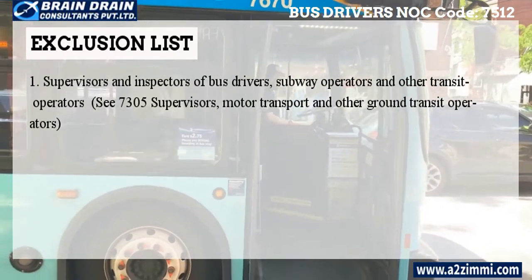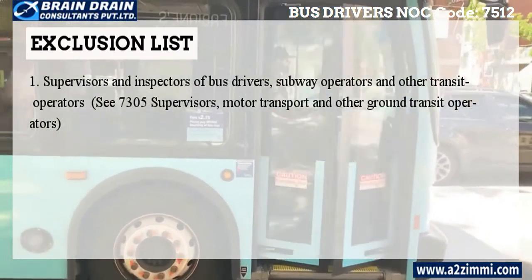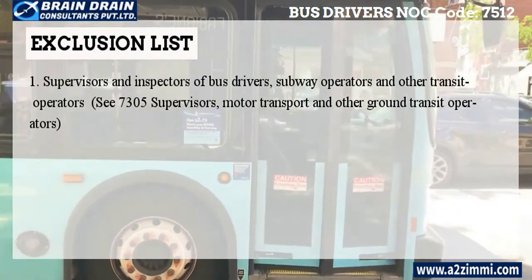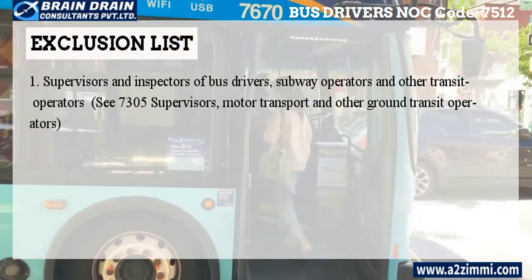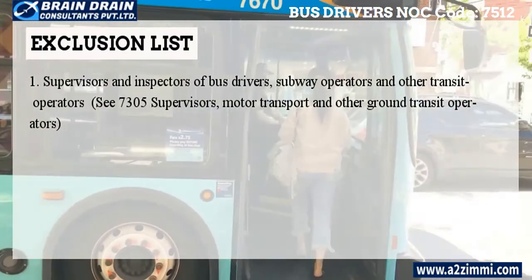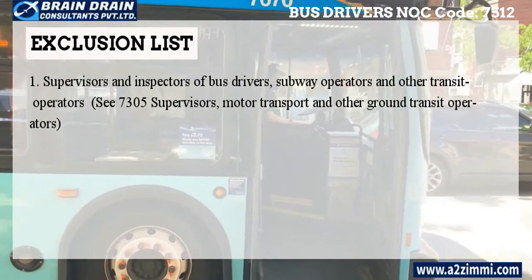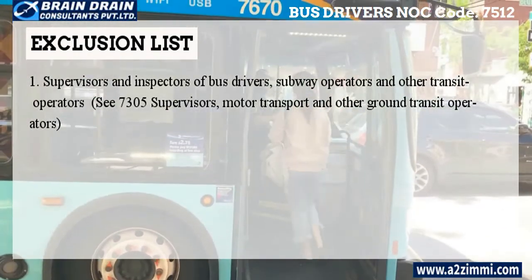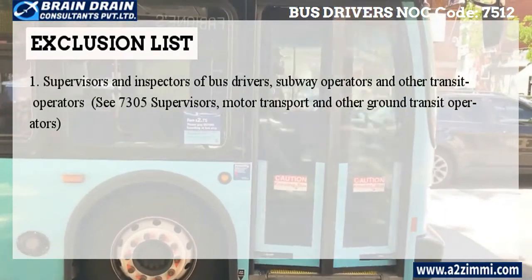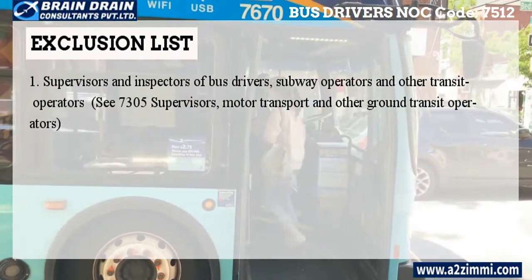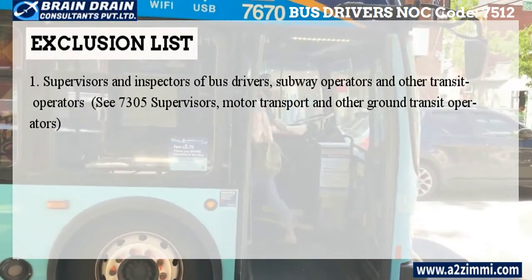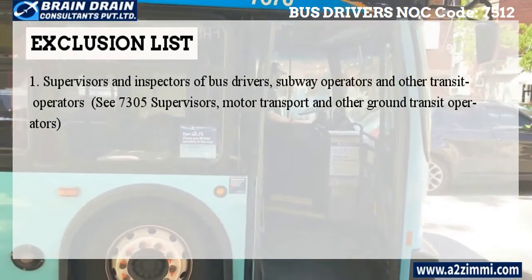The exclusion list includes: supervisors and inspectors of bus drivers, subway operators, and other transit operators — see NOC 7305, supervisors of motor transport and other ground transit operators. This was all about the profile of bus drivers, subway operators, and other transit operators with NOC code 7512.